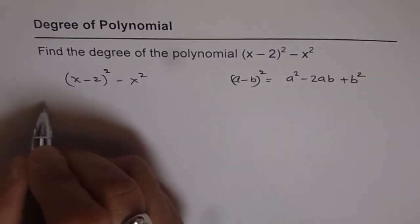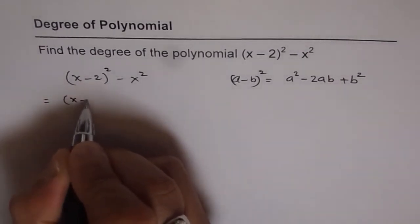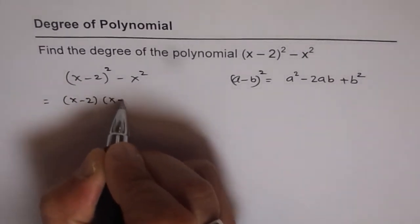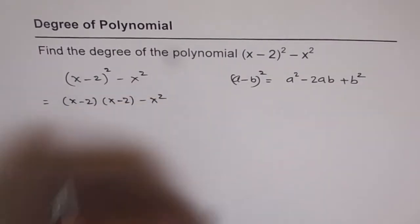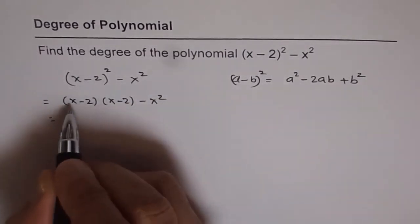Or you can expand it by writing (x - 2) times (x - 2), either way. So let me do it this way now. So multiply,